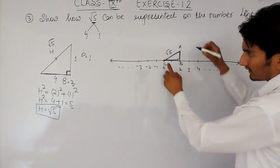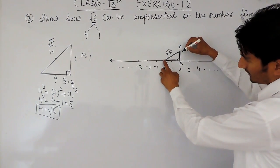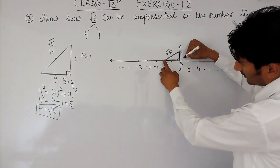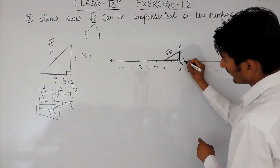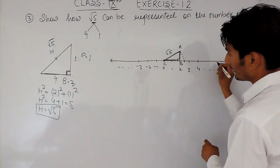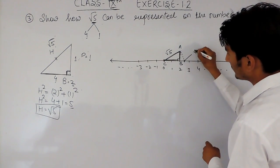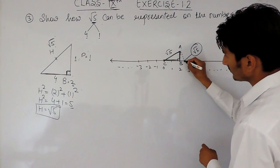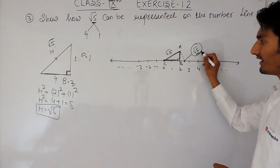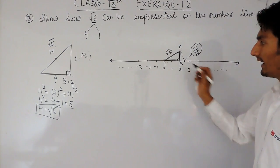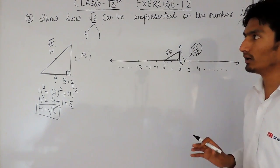Okay, so taking compass here and I have to draw an arc and this arc, where these arc intersects on this number line, this will be root 5. This point will represent root 5. Okay, and this is how you can solve this particular question.